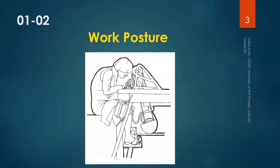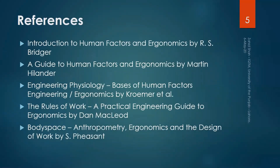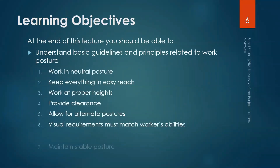Welcome back. We were discussing the topic of work posture. In the previous segment we discussed some anatomy related to work posture — the role of facet joints, the intervertebral disc, and ligaments and muscles attached to the backbone in maintaining good posture. In this segment we will discuss some guidelines and principles related to work posture. We will cover seven principles with the help of examples.